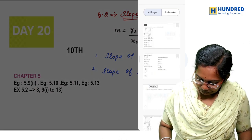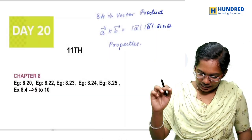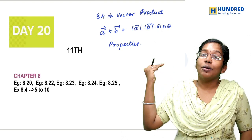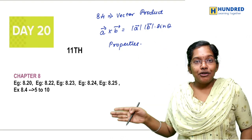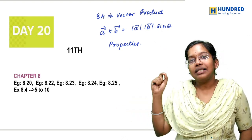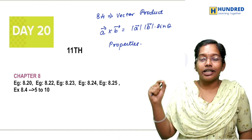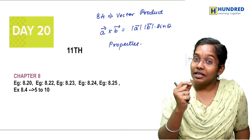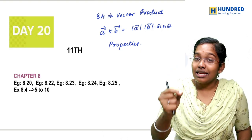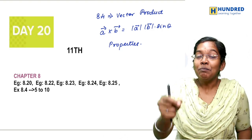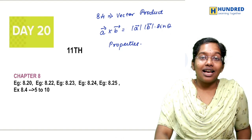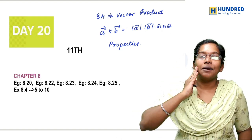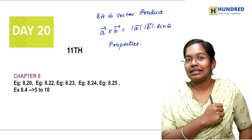For 11th standard students, if you are learning what you are learning, you will know vector products. For vector products, there are properties and there are 8.4 exercises with examples and exercise sums. On those 10 sums you can solve them. You can find it in the formula sheet and fix it.